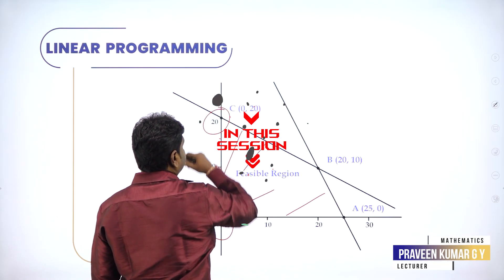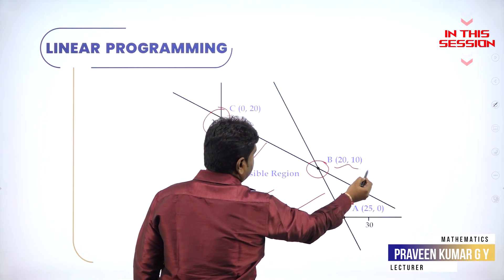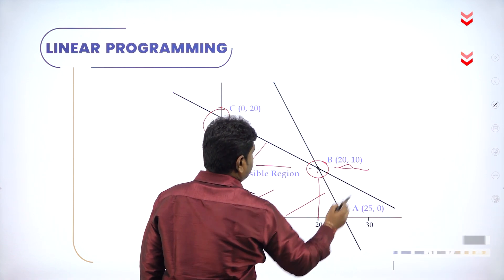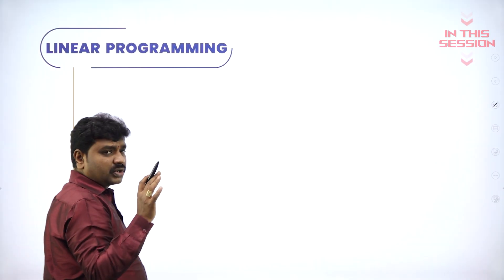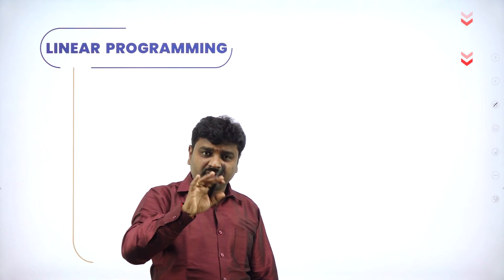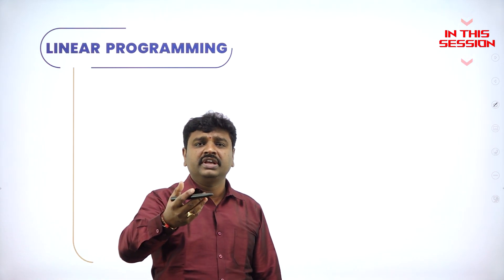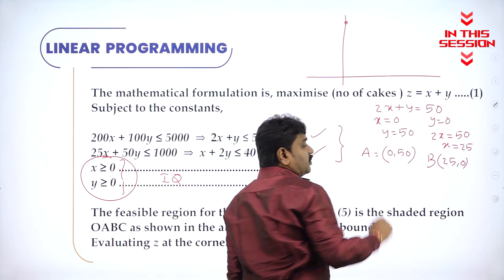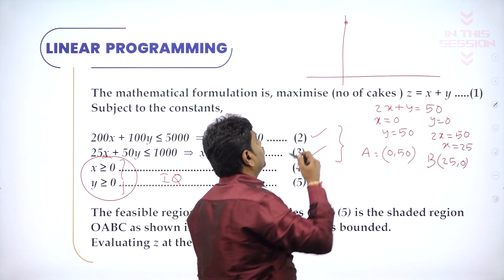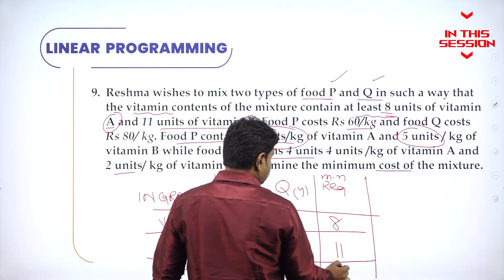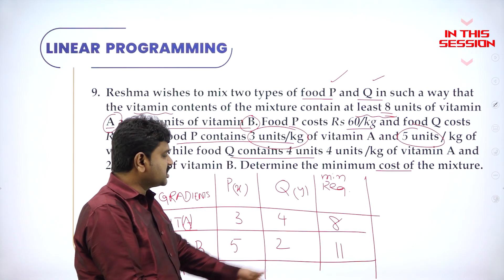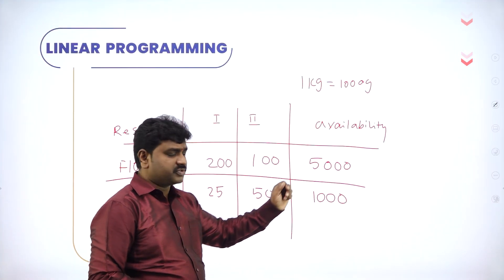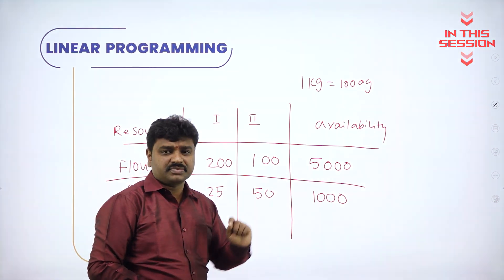O is one of the corner points, this is another corner point, and B is the point of intersection. When you drop a perpendicular it means the coordinates are 20 and 10. This is the point of intersection. We have 5 kg of flour, meaning 5000 grams of flour, and 1 kg of fat, meaning 1000 grams of fat.